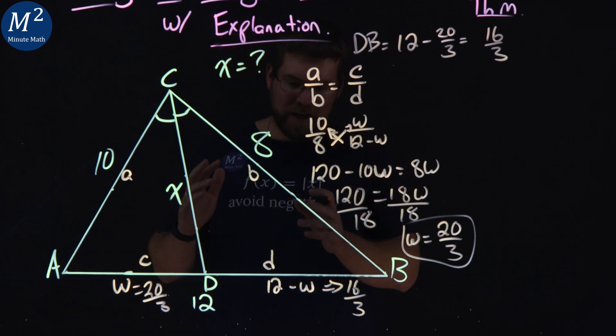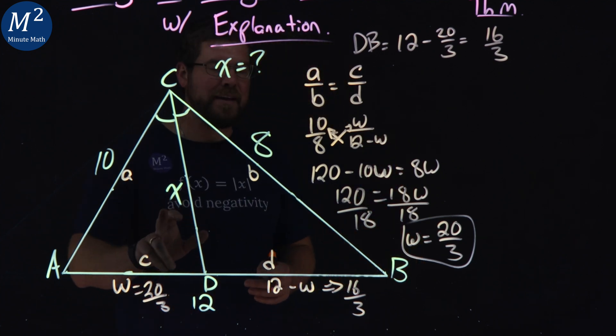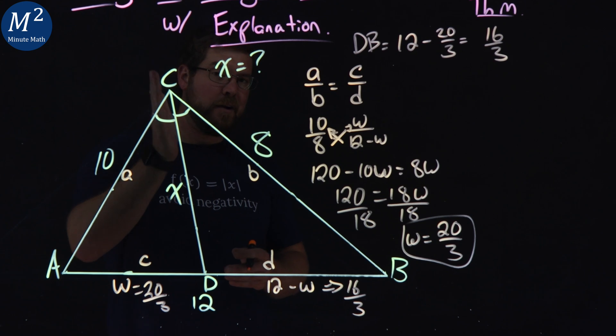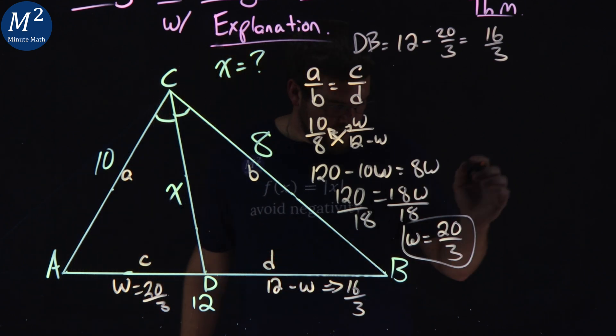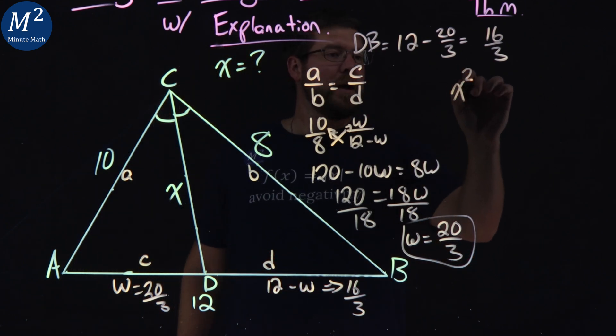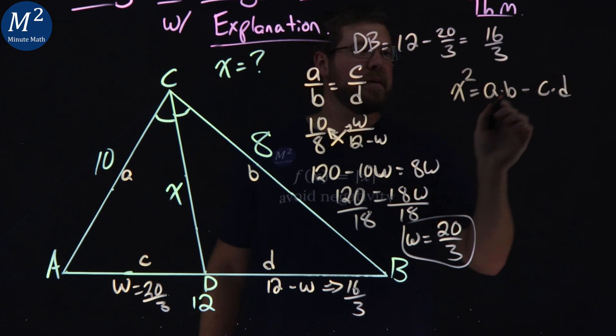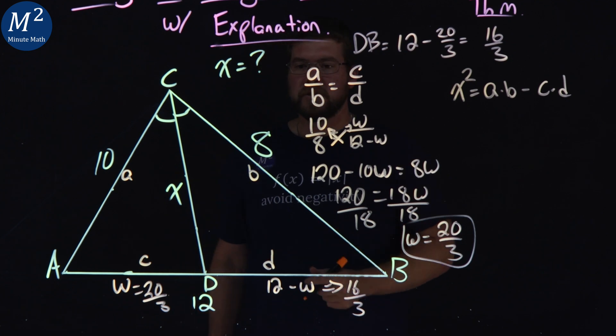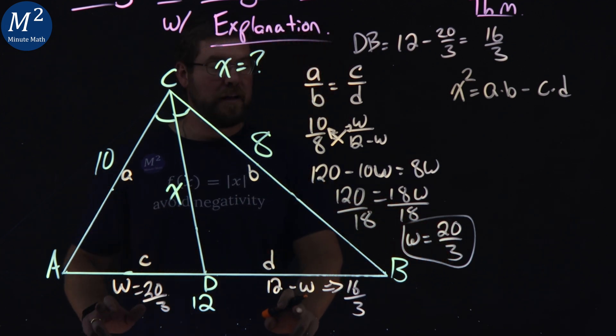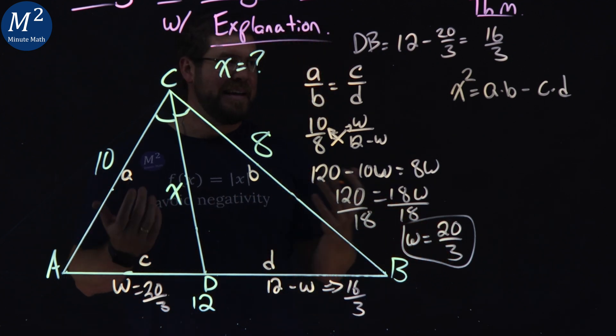Stewart's theorem is this with the same a, b, c, d values, and I'm using x here for this angle bisecting line. Stewart's theorem says that x squared equals a times b minus c times d. So now we have all the information that we need. That's what we're going for here. We can plug it in.